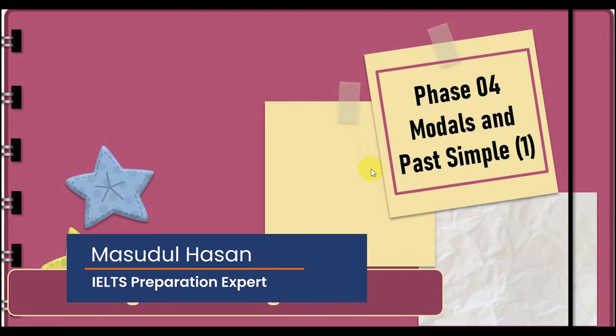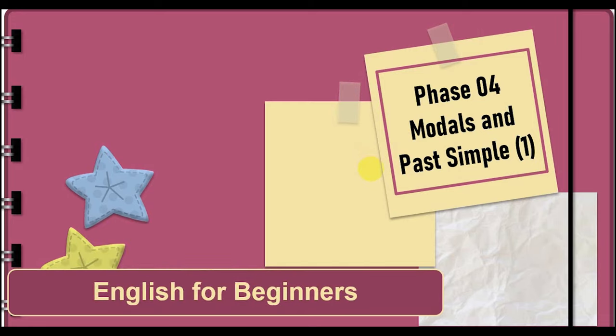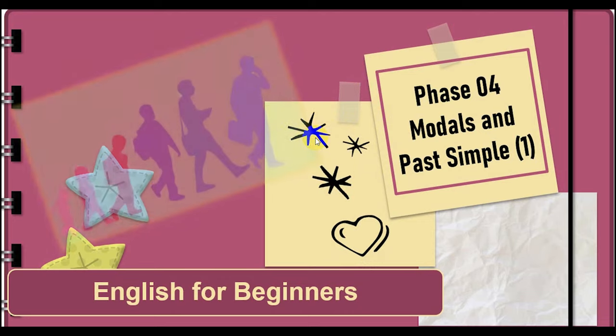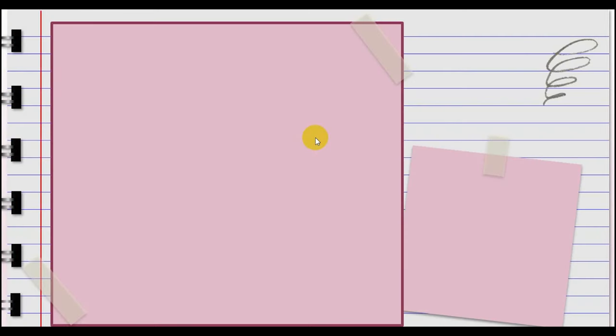Welcome to English for Beginners lesson 26. This is the second lesson of phase 4 where we are looking into modals and past tense. So in lesson 26 we will consider the differences between could and would.